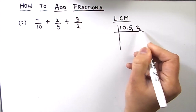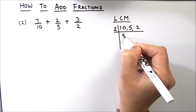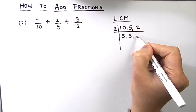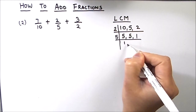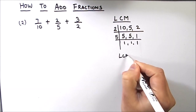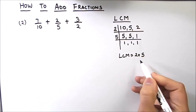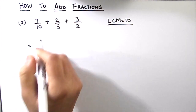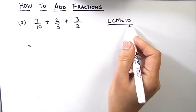We divide these three denominators by prime numbers. 2 times 5 is 10; 5 is a prime number and 2 times 1 is 2. Now 5 times 1 is 5. The LCM will be the product of the numbers on the left-hand side, which is equal to 10. So our LCM is 10.